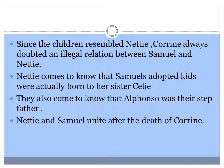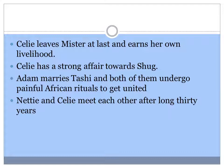From Samuel, Nettie comes to know that their adopted kids were actually born to her sister Celie. They also come to know that Alfonso was their stepfather and not their biological father. Nettie and Samuel unite after the death of Corrine. Celie leaves Mr. at last and earns her own livelihood. We are moving to a happy ending of the novel. Celie has a strong affection towards Shug.